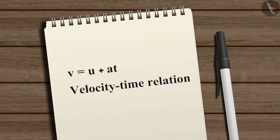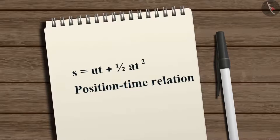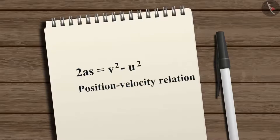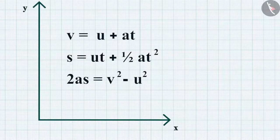The first equation, V equals U plus AT, shows the velocity-time relation. The second equation, S equals UT plus one-half AT squared, shows the position-time relation. The third equation, 2AS equals V squared minus U squared, shows the relation between position and velocity. Now let us derive these equations by graphical method.